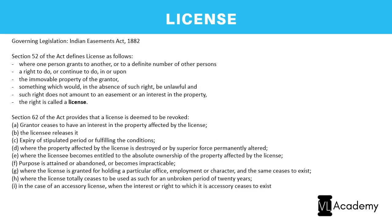License, unlike mortgage or sale deed, is governed by the Indian Easements Act 1882. This is a critical difference: in a license there is no conveyance and no interest is transferred—it is a pure permission. Because there is no transfer, it falls outside the Transfer of Property Act. Section 52 of the Easements Act defines the term license.